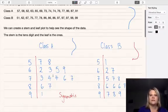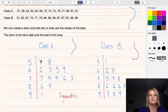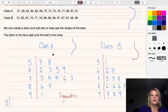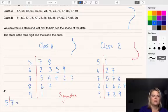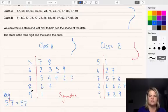The final part of our stem plot that we need to add is a key at the bottom of each plot. These two are two separate plots so they'll need a key each. All you need to do is choose one number so we might choose the first one 57 and we write it out like it is in the plot, five line seven, and we usually write the word key next to it. Key equals five line seven is 57 and that's just to let people know that the stem is the tens and the leaf is the units column.